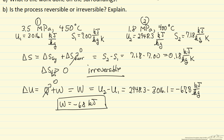The work is negative, which means the system did work — we removed energy from the system. Because we removed energy, the temperature decreased.